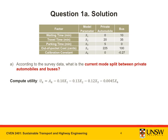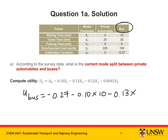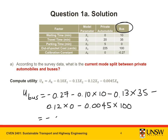We can then calculate the utility of traveling by bus using the same process. We get the calibration constant minus 0.27, minus 0.1 multiplied by the waiting time (10 minutes), minus 0.13 multiplied by the travel time (35 minutes), minus 0.12 multiplied by the parking time (0), minus 0.0045 multiplied by the out-of-pocket cost (100 cents). This gives a utility value of negative 6.27.